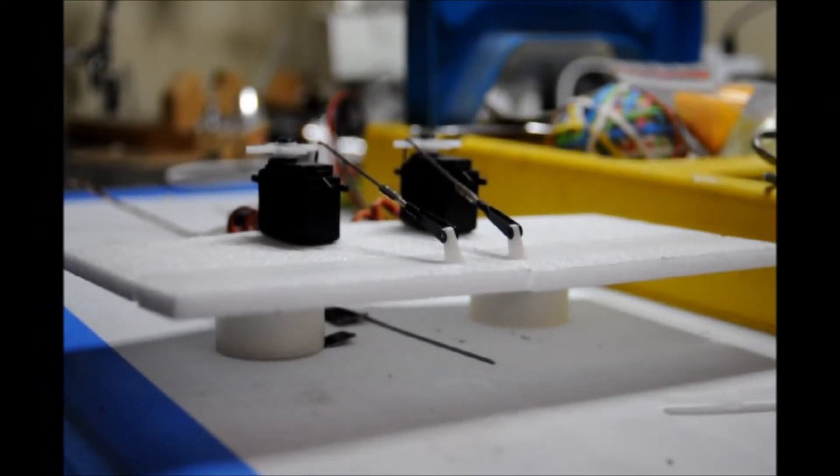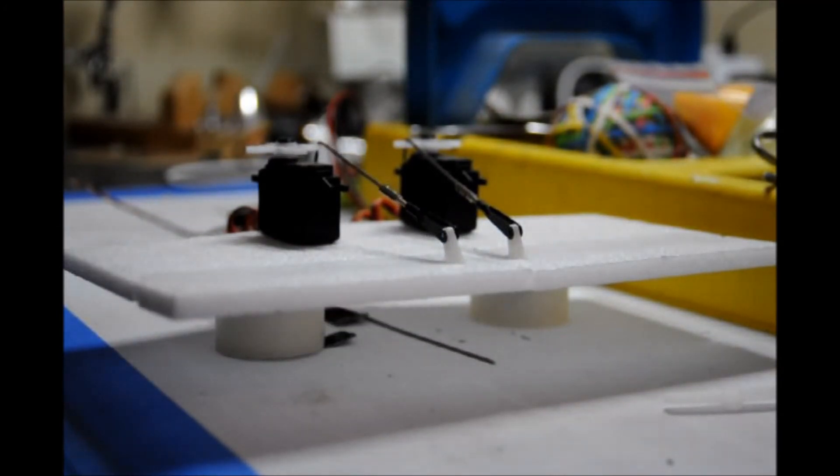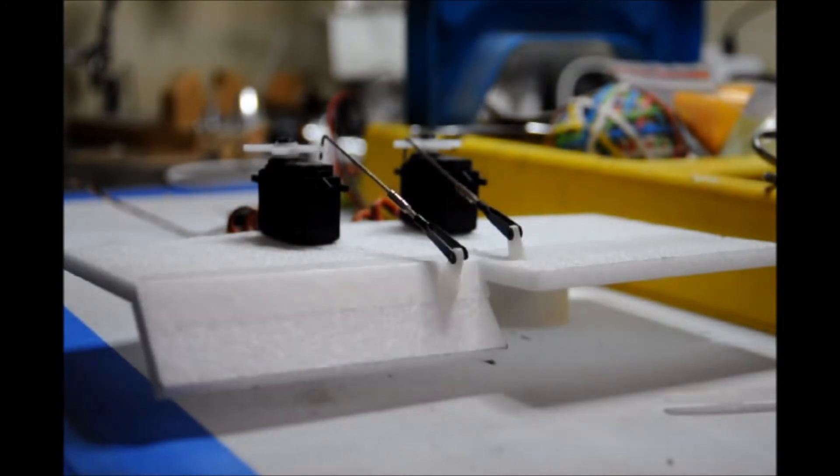This is our servo simulator and we're going to show you how that speed adjustment works. Here's the aileron, and here is the flap. Notice it went down nice and slow, but it came up faster. That's exactly what we set on the speed setting. It went down slower because we programmed it that way and it comes up faster.